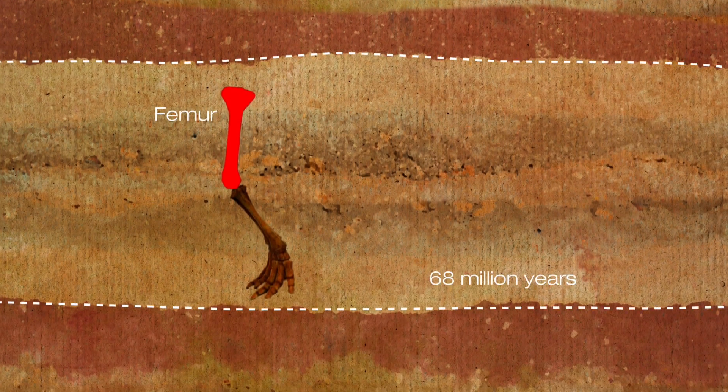Pull a fossil of a dinosaur femur, or thigh bone, out of a rock layer that's, say, 68 million years old, and you know that dinosaur must have lived about 68 million years ago.